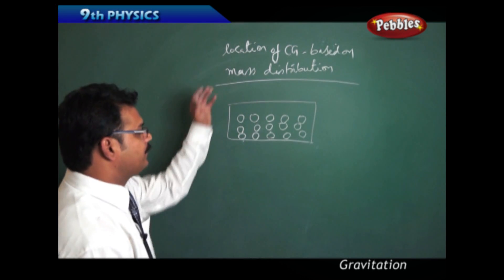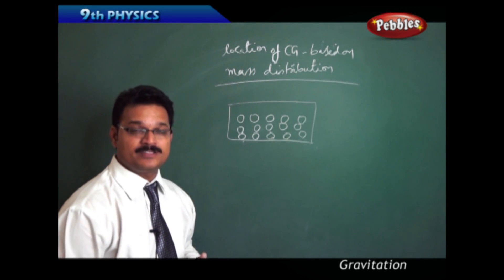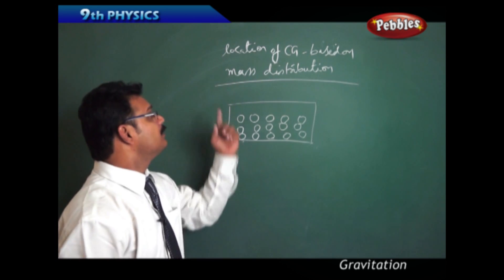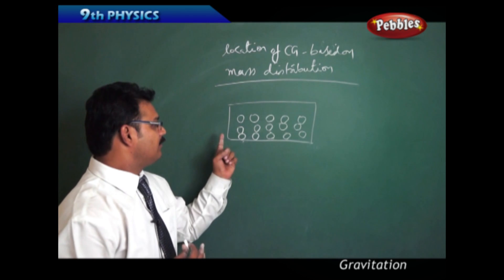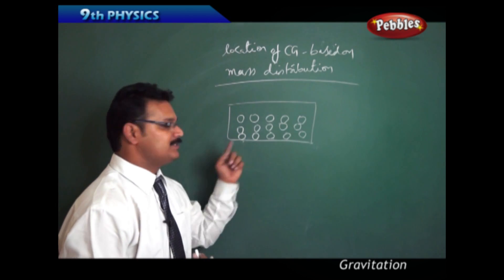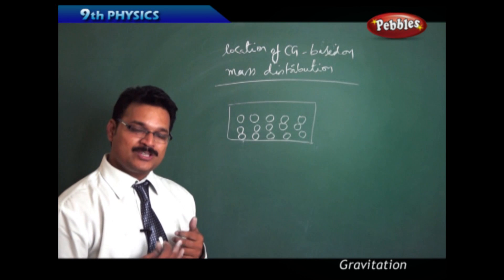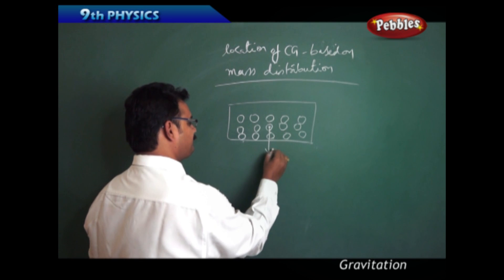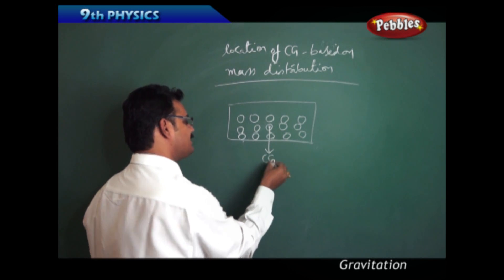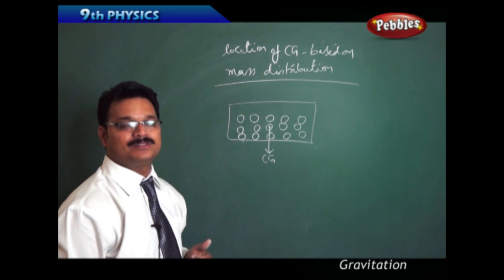Here, I am trying to explain how to find the location of the centre of gravity based on mass distribution. There is a box with 15 marbles, and these 15 marbles are evenly distributed. So if you ask what is the centre of gravity of this box, it is exactly the centre of the box.